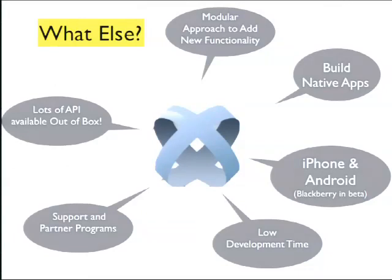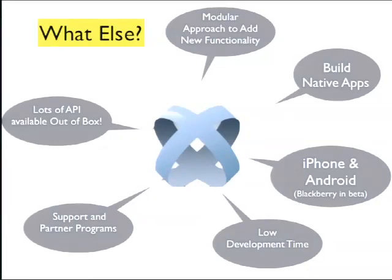Titanium has a modular approach to add new functionality to your existing framework. It's open source, so you can fork it and customize it according to your needs. There are lots of available APIs out of the box, like Social Networking API and YQL API. It supports iPhone and Android out of the box. BlackBerry is still in beta for developers. The best part is low development time, which reduces the cost of the product. It's scalable — you build it once and scale it. You're maintaining just one code base for everything.